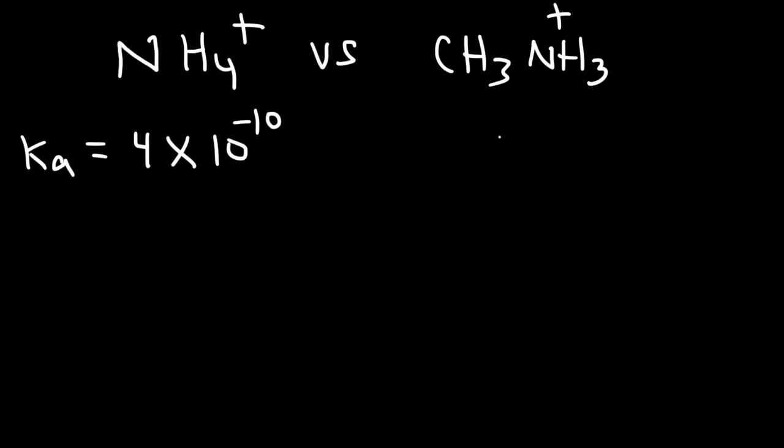Now let's look at one more example. So let's compare NH4+, also known as ammonium, and CH3NH3+. So the Ka value for NH4+ is 4 times 10 to the negative 10. And for the methyl ammonium ion, it's 2 times 10 to the minus 11. So identify the stronger acid.